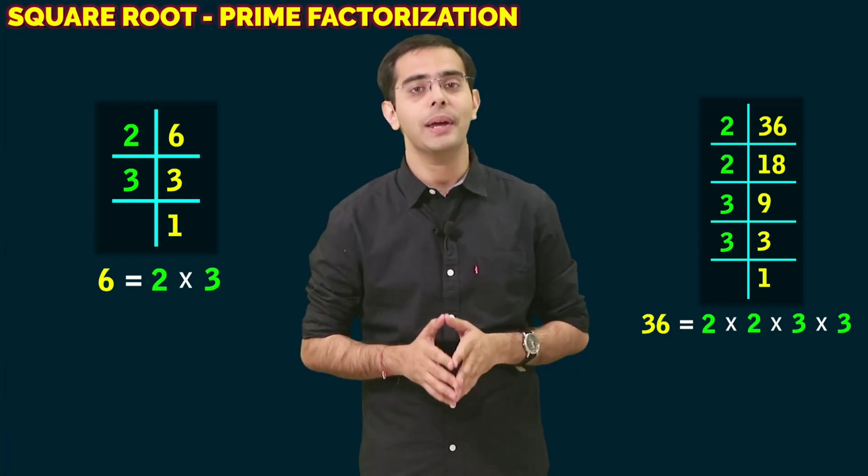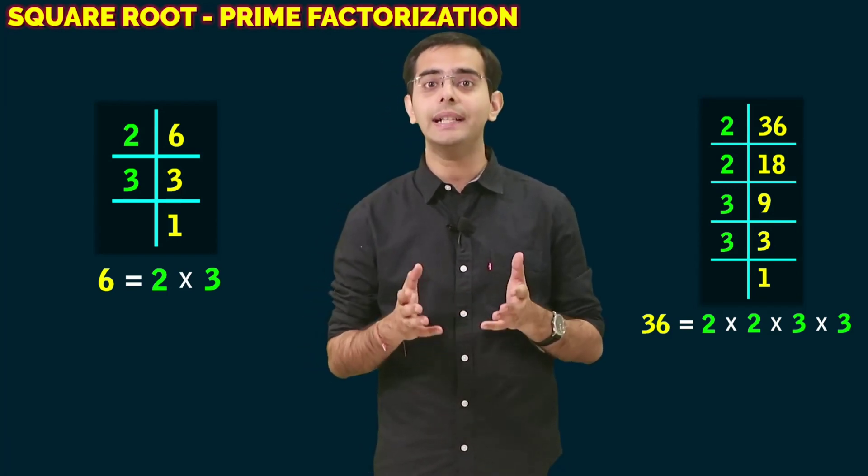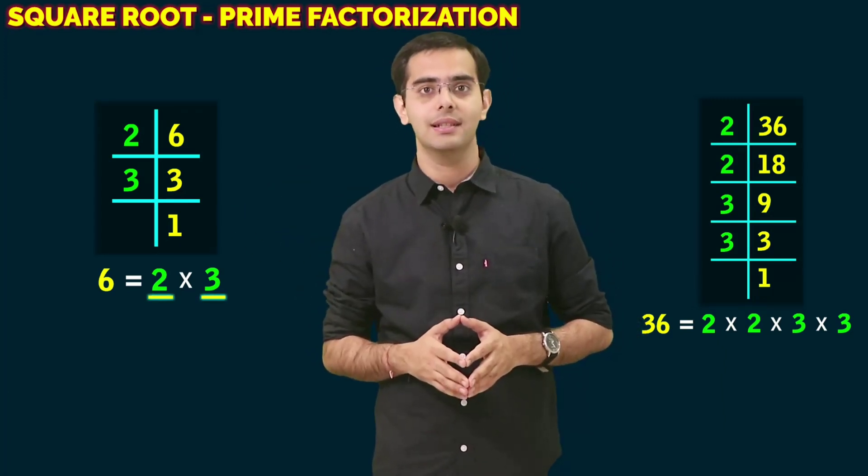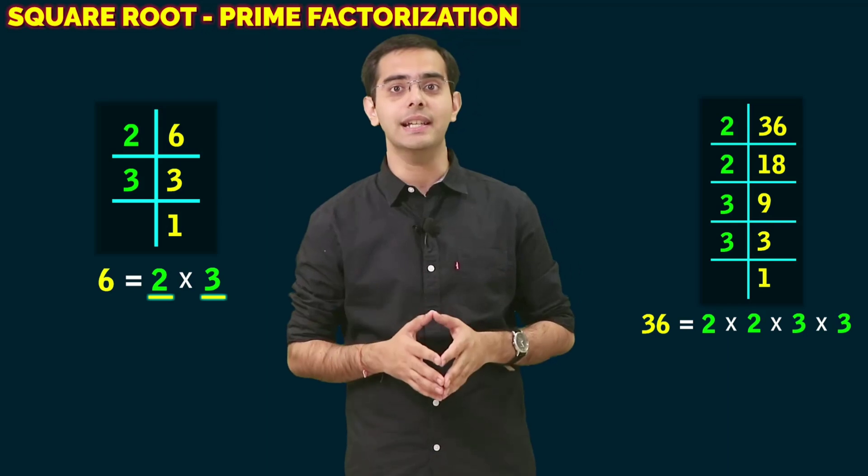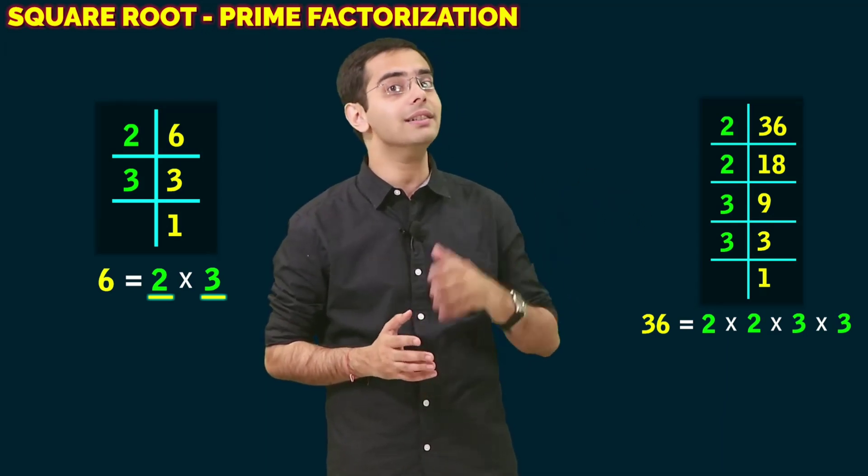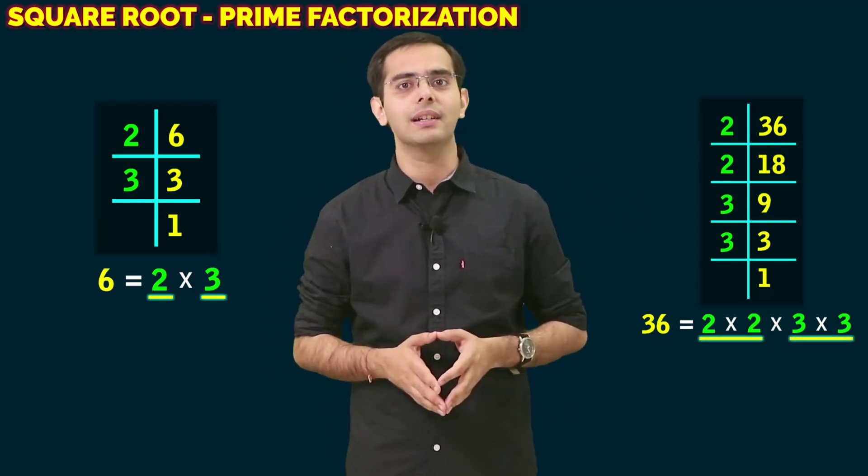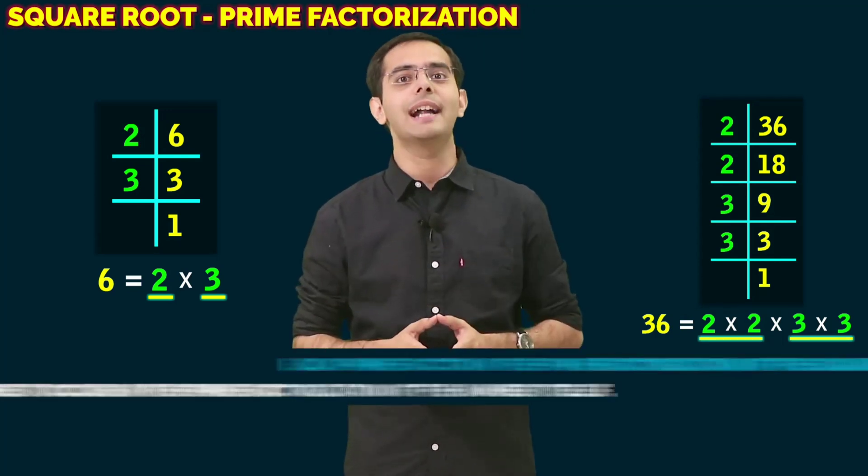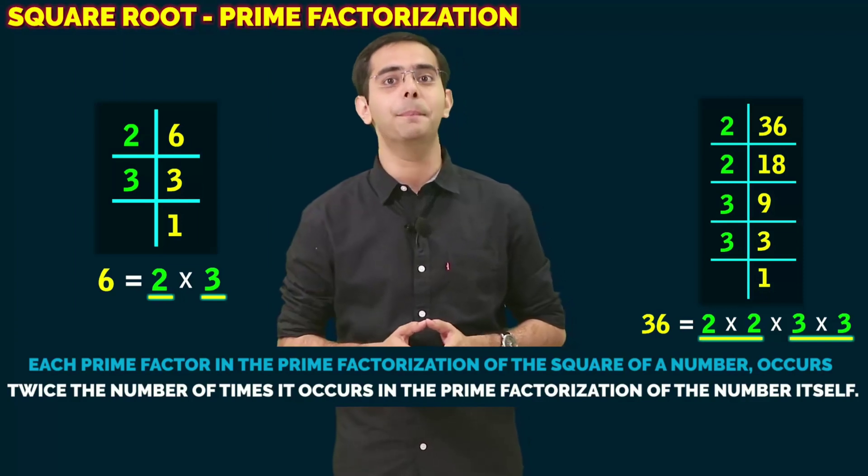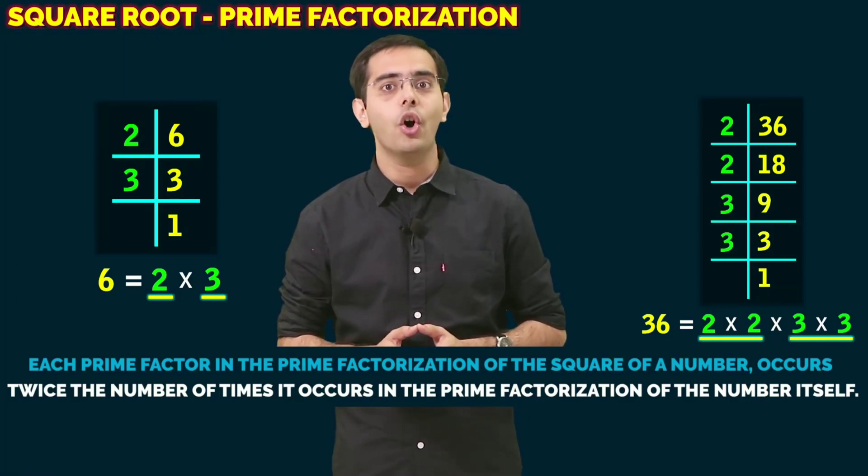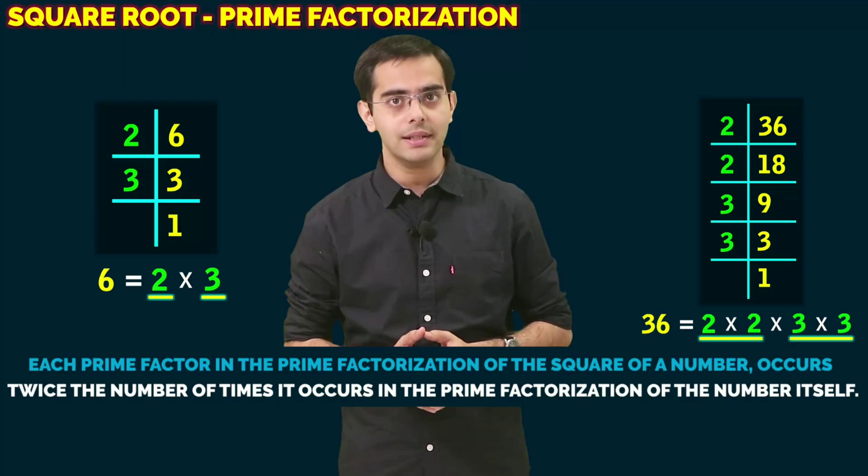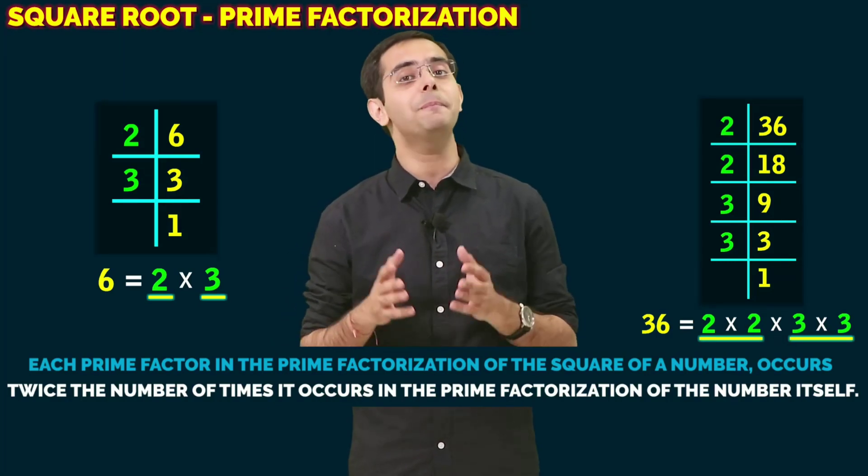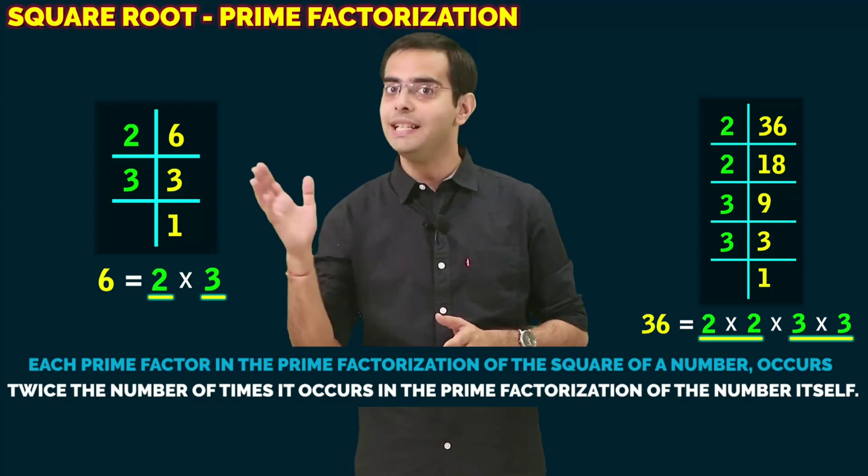Here you can see that 2 and 3 occur once in the prime factorization of 6, while in the square of 6, that is 36, they occur twice or in pairs. We can infer that each prime factor in the prime factorization of the square of a number occurs twice the number of times it occurs in the prime factorization of the number itself.